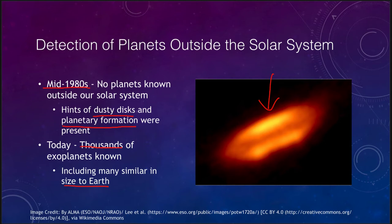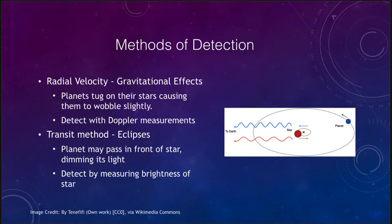Now, how can we detect these planets? There are several methods that are used, including gravitational effects as one example, and what we call the transit method, or eclipses that occur. Let's first look at the radial velocity effects.